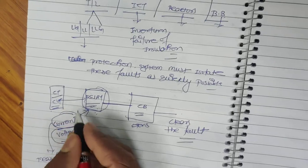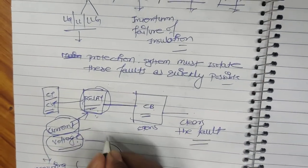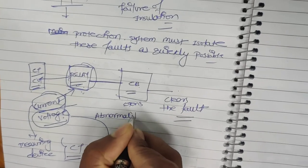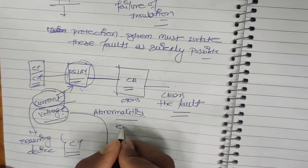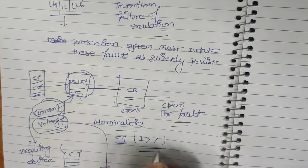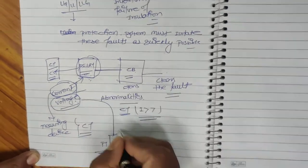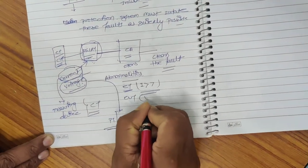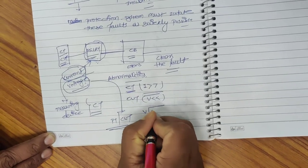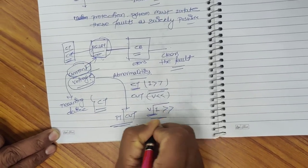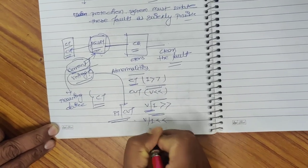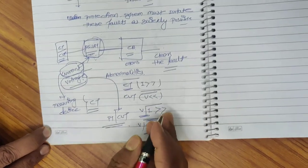The relay, after detecting the current and voltage signals, identifies any abnormality using its algorithm. For example, if the current from the CT is more than the set value, the relay detects it as an overcurrent and operates. Similarly, from the CVT, if the voltage drops below a certain value, that is under-voltage, and the relay will operate. Or, if the ratio V/I is more than or less than some set value, the relay will operate — depending on what kind of algorithm is being used.